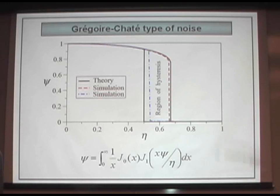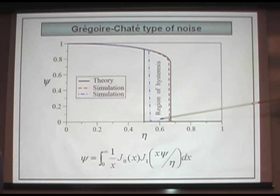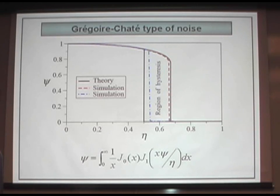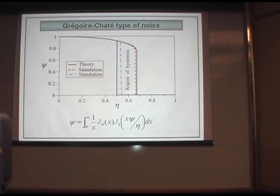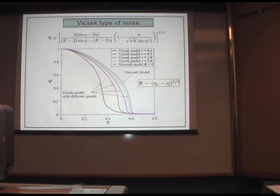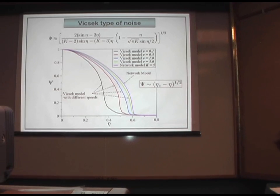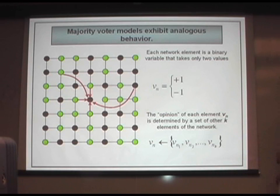On the other hand, if we use the Chaté type of noise in the network model, we can see that the phase transition is indeed discontinuous, and there is a region of hysteresis, as you can see here. This is very interesting — that just by changing the way in which the noise is introduced, you can change the nature of the phase transition from continuous to discontinuous with a region of hysteresis.